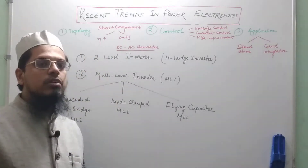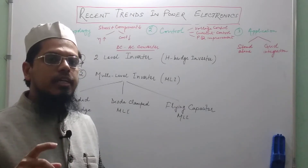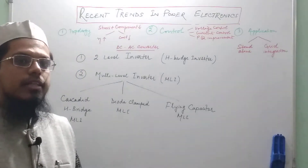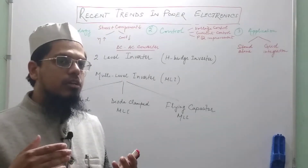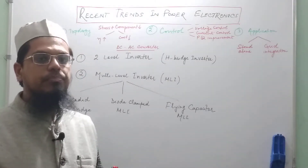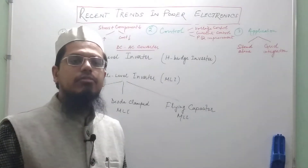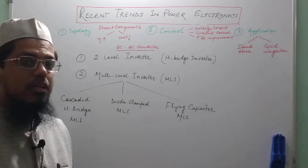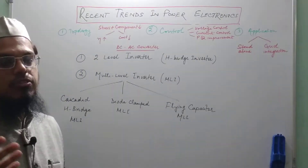When the voltage stress in a converter is higher, then definitely the power loss associated with it — the switching loss — would be more. Moreover, if there are more number of components, then the various types of losses associated in a power semiconductor controlled circuit, like turn-on and turn-off losses or conduction losses, are definitely going to increase.